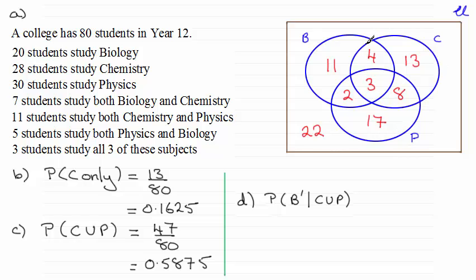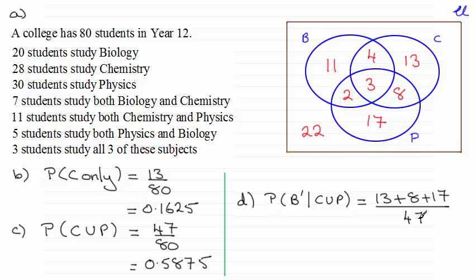Well it's these 13, 8 and 17 students. So the answer is going to be equal to 13 plus 8 plus 17 out of the 47 students who do chemistry or physics or both. And this reduces down to 38 out of 47.